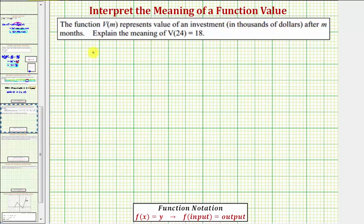We're asked to explain the meaning of V of 24 equals 18. So we first need to recognize that the function output is 18, where the function value is equal to 18, where the function V of m represents the value of an investment in thousands of dollars.